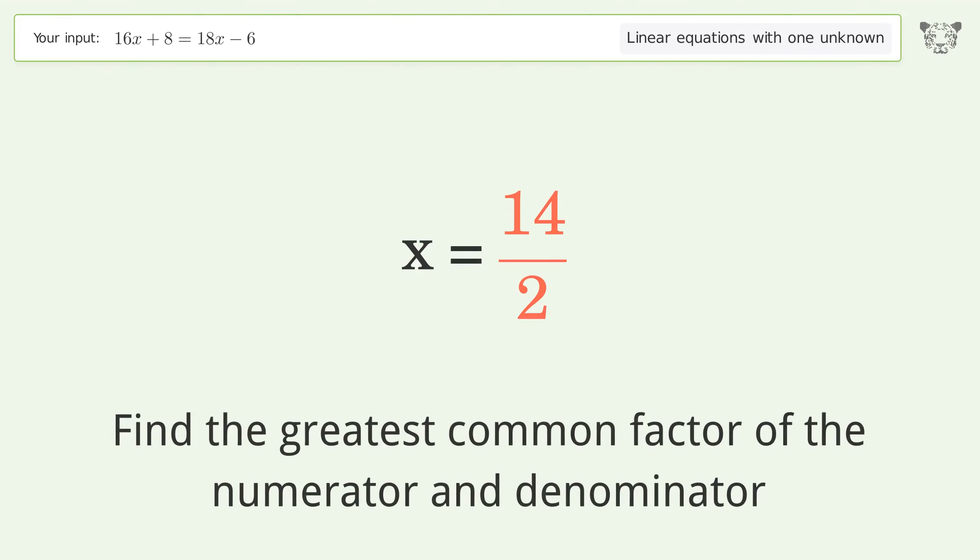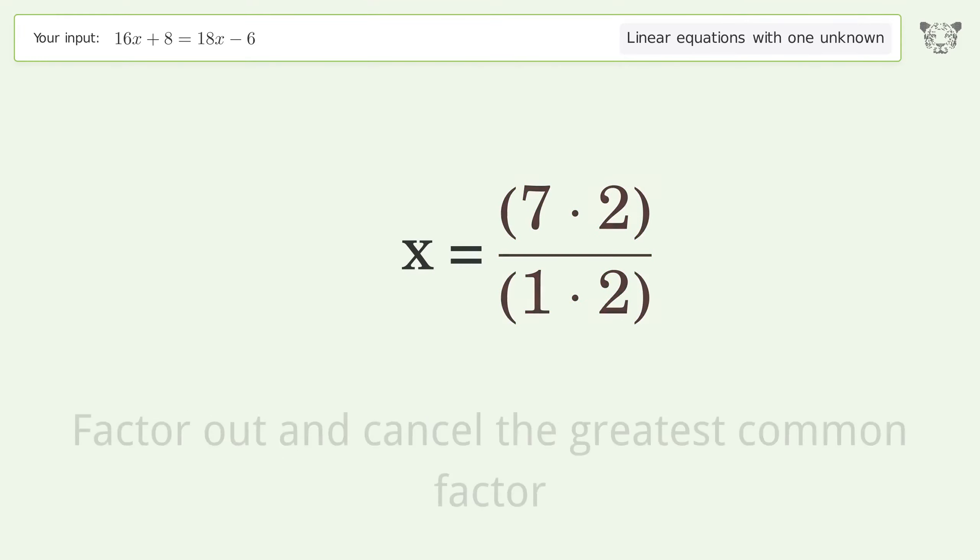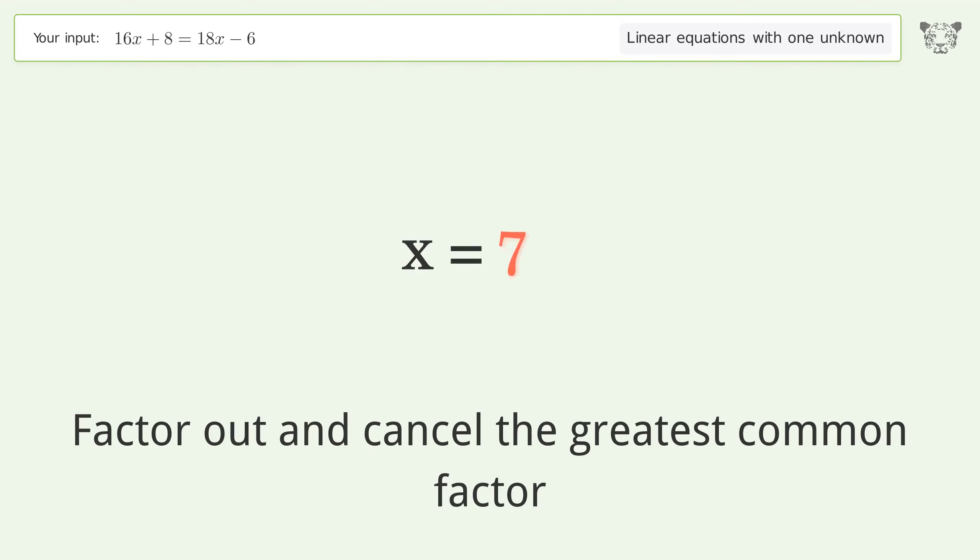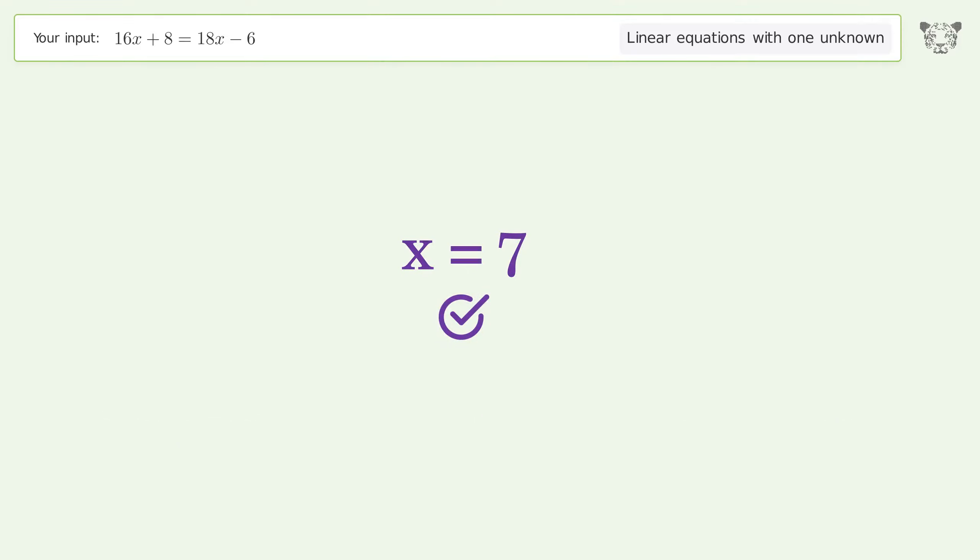Find the greatest common factor of the numerator and denominator. Factor out and cancel the greatest common factor. Factor out, and so the final result is x equals 7.